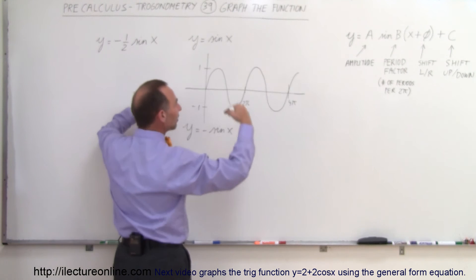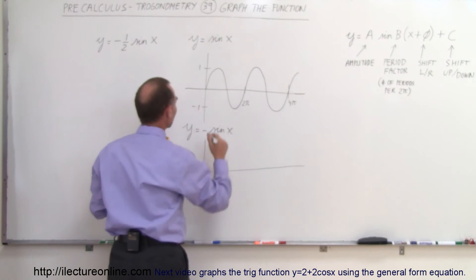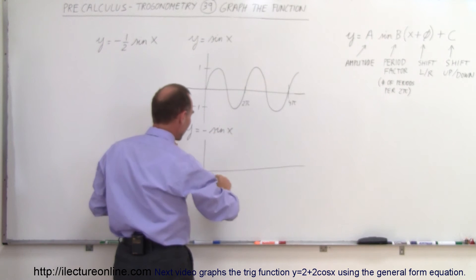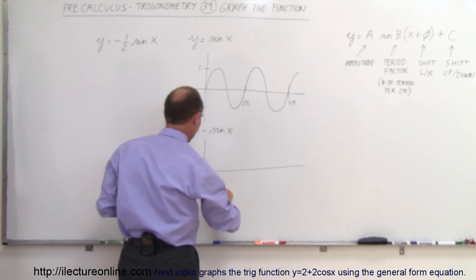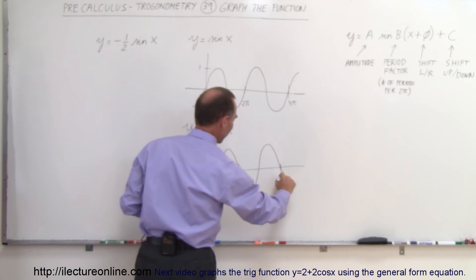The negative sine of x simply flips this graph around. So instead of starting up, we start down instead. So we go like this, and this is 2π, come around like that, and that would be 4π. It's simply this graph flipped over and drawn in reverse.